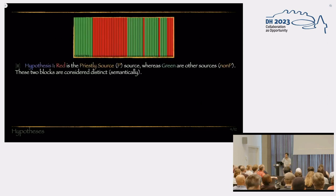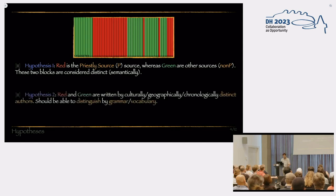And the hypothesis that we make in our study is as follows. Red is considered as the priestly source, whereas green are other sources. Non-P, we're not going to try to discern different sources, but rather just the priestly against non-priestly. And these two blocks are considered distinct for some reason. We don't know what reason it is yet. And the second hypothesis is that the red and green blocks are written by culturally, geographically, or chronologically distinct authors. And this difference should manifest itself also by the grammatical structure or the vocabulary use of these two blocks of text.